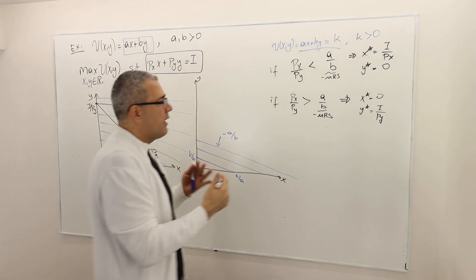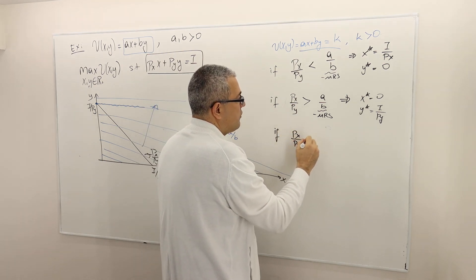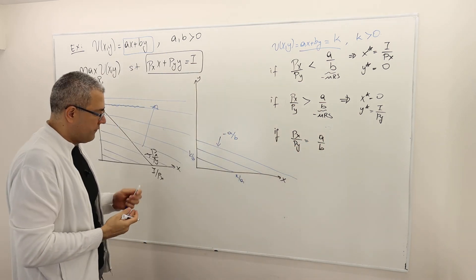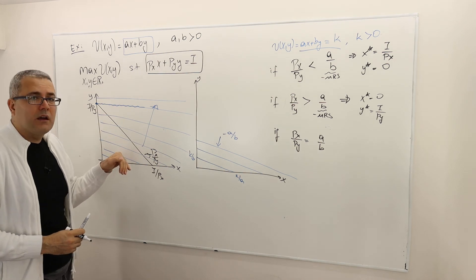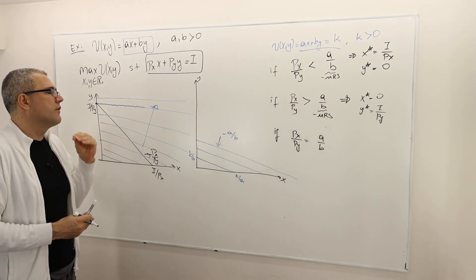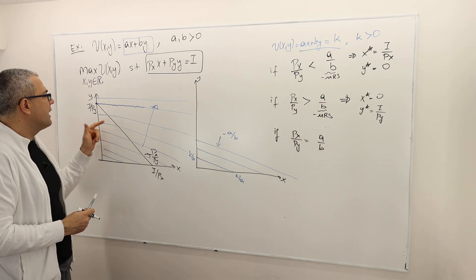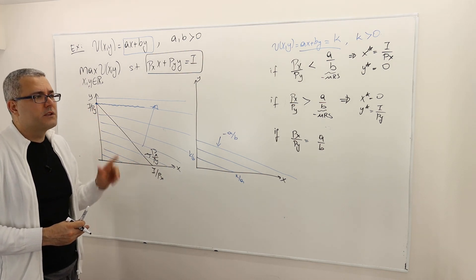One final case - what if these two price ratios are equal? Well, as you can anticipate, the blue lines and the black line are going to be parallel to each other. That means the highest indifference curve you can achieve is actually on top of the black line itself.